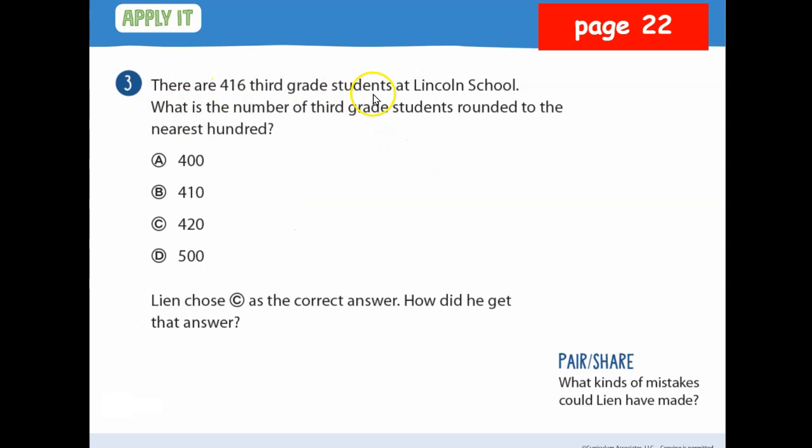It says there are 416 third graded students at Lincoln School. What is the number of third graders rounded to the nearest hundreds? Look at your choices. You can do it a couple ways. Number line. And again, I like to do it like this. This is on page 22, by the way. 416. What number is in the hundreds place? Four. Look at the number to the right. What does the one say to do to the four? Stay the same. And replace these two numbers with zero. So then what's my answer? Four hundred, which is letter A.